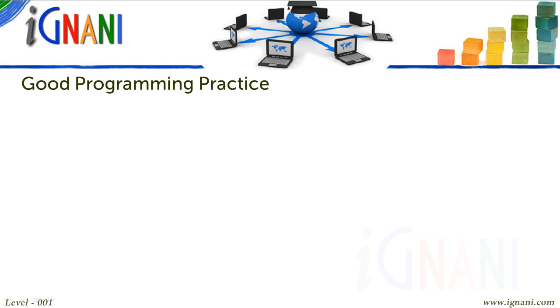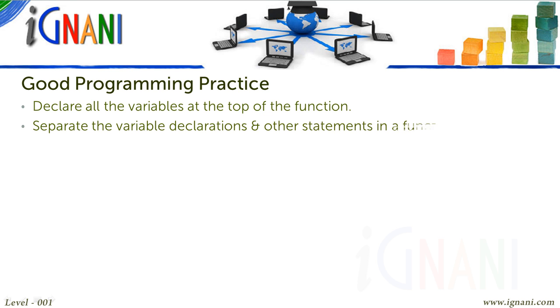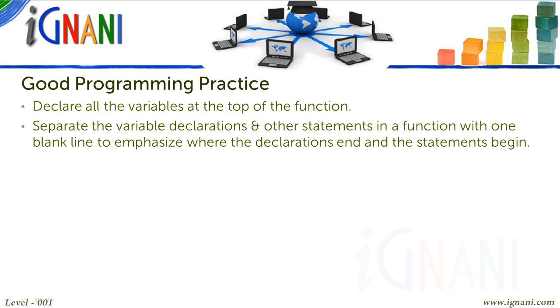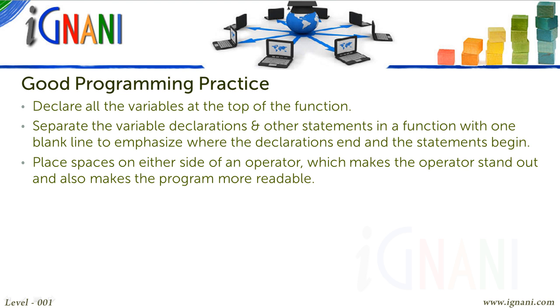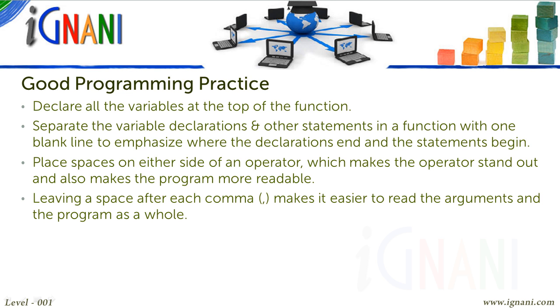Good programming practice to follow: Declare all the variables at the top of the function. Separate the variable declarations and other statements in a function with one blank line to emphasize where the declarations end and the statements begin. Place spaces on either side of an operator, which makes the operator stand out and makes the program more readable. Leaving a space after each comma makes it easier to read the arguments and the program as a whole.